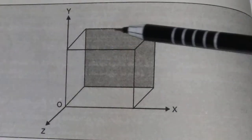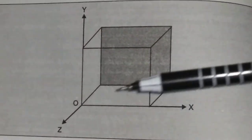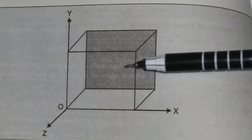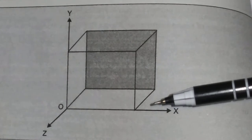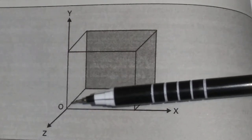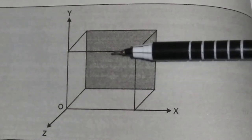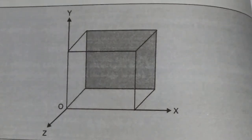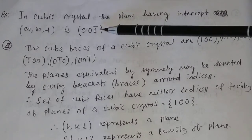Consider a cubic crystal with x-axis, y-axis, and z-axis. The shaded plane has intercepts infinity, infinity, and minus 1 — it cuts the Z-axis on the negative side of the origin. So the Miller index of this plane is (0 0 -1), written as (0 0 1-bar). In cubic crystal, the plane with intercepts infinity, infinity, minus 1 is (0 0 1-bar).